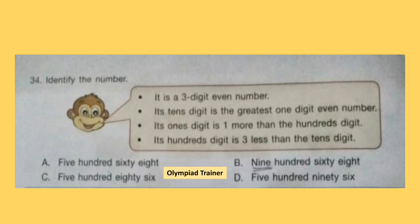Question 34. Identify the number: it is a 3-digit even number. Its tens digit is the greatest 1-digit even number. Its ones digit is 1 more than the hundreds digit. Its hundreds digit is 3 less than the tens digit. The greatest 1-digit even number is 8, so the tens place is 8. Looking at the options, only option C has 8 in the tens place. So option C is the answer: five hundred eighty-six.